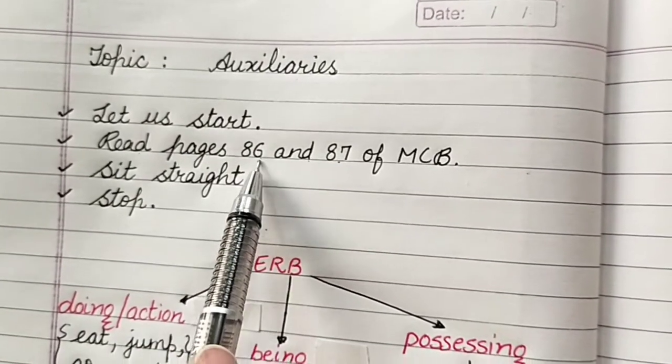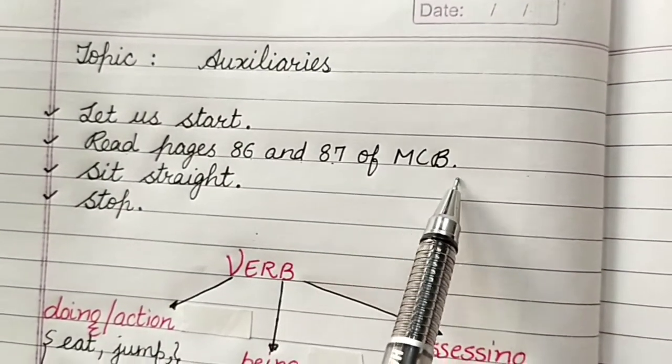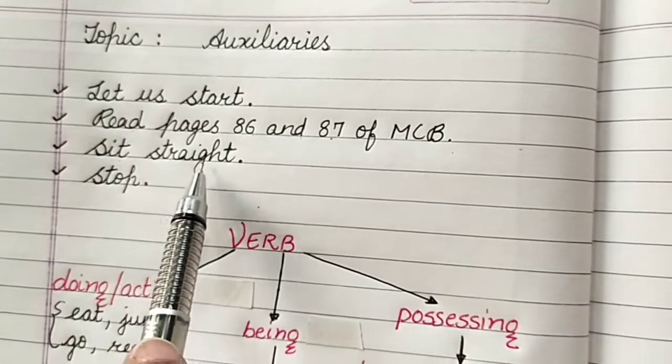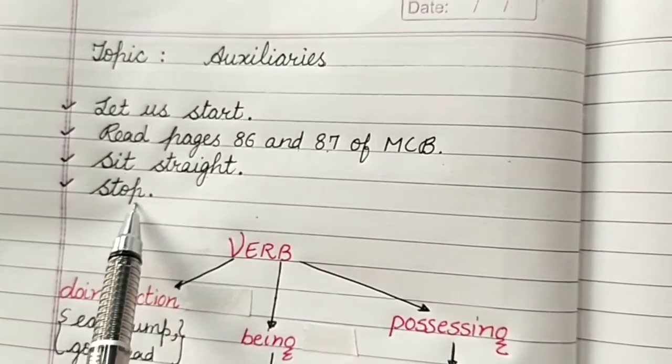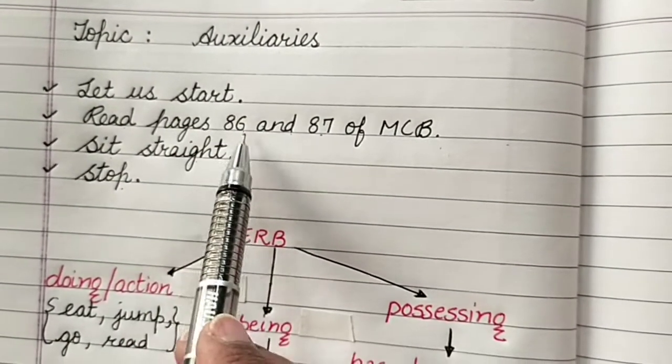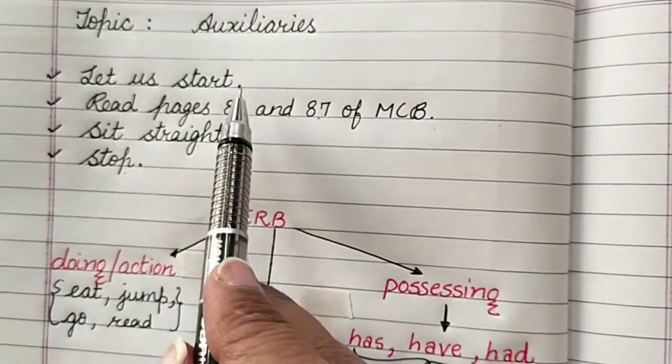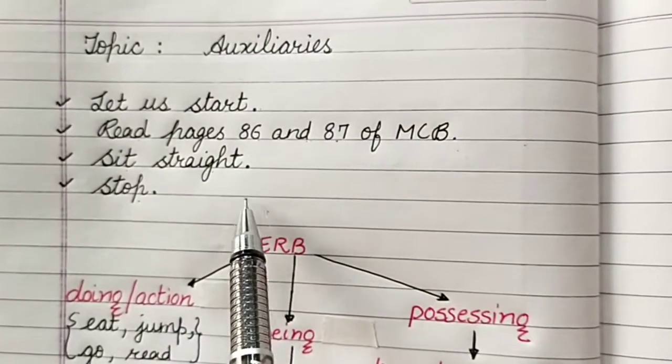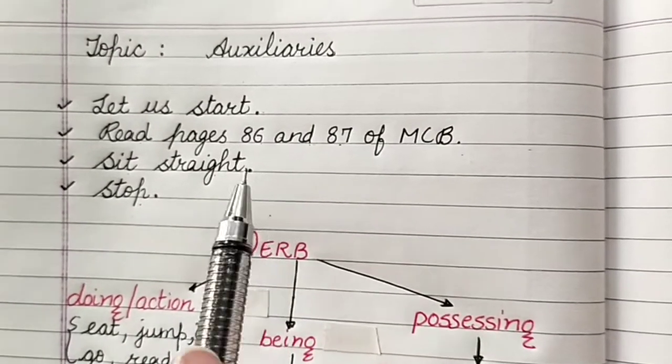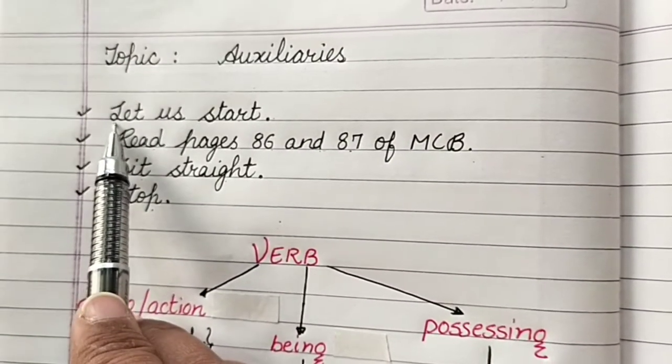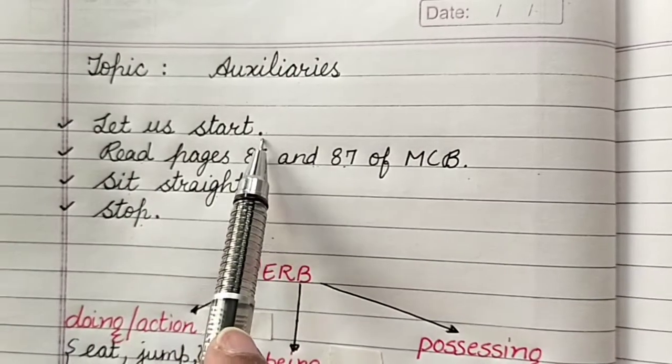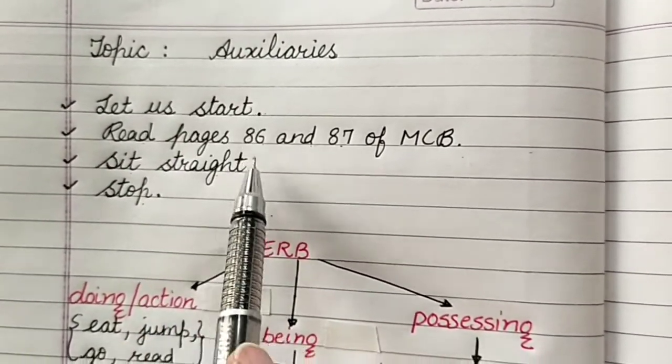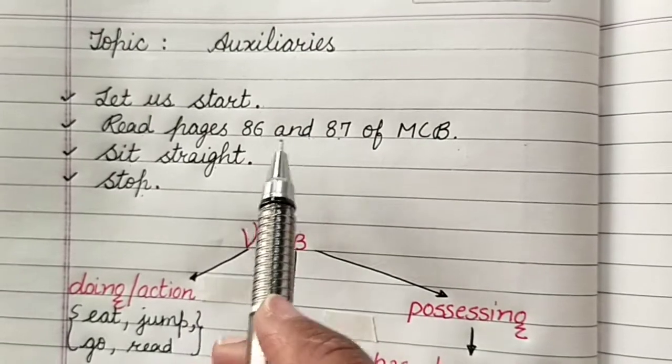Read pages 86 and 87 of MCB. Sit straight, stop. Now if I look at these, I can easily say that these all separately are the sentences. First they begin with capital letter and full stop. But actually they all are giving complete sense.